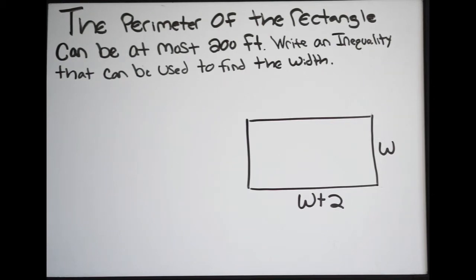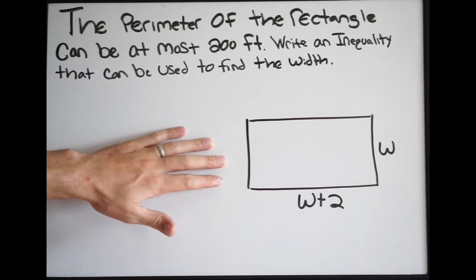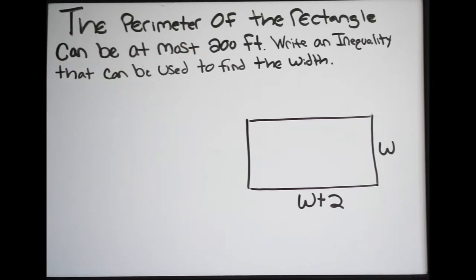Okay, so in this example we're dealing with inequalities. Let's go ahead and read the word problem and then we'll talk about how to set it up. It says the perimeter of the rectangle can be at most 200 feet. We have this little drawing of this rectangle here. It says write an inequality that can be used to find the width.